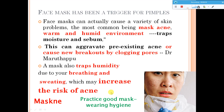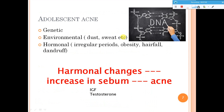Double masking can make it even more severe. Adolescent acne is most commonly seen during puberty because of hormonal changes. It can be genetic — if your parents had too much acne it can transfer to you through genetics. It can also be environmental due to dust, sweat, etc., or because of hormonal changes like irregular periods, obesity, hair fall, and dandruff.